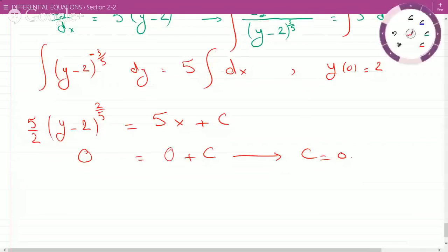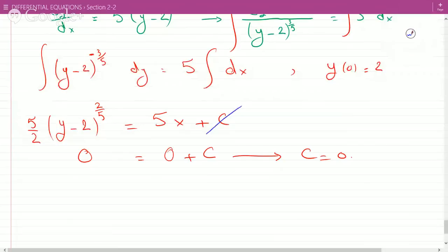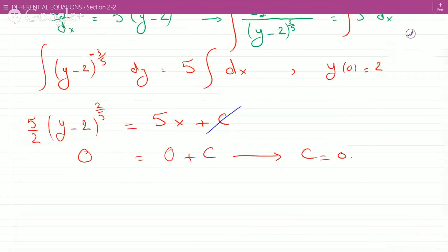So that means this guy goes away and we get (y-2)^(2/5) = 2x because this 5 and this 5 will cancel out.